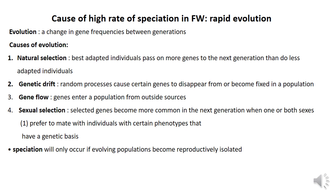Genetic drift: random processes can cause certain genes to disappear from or become fixed in a population. When some genes disappear, certain characteristics develop or become fixed in subsequent generations — this is called genetic drift, and it is also a form of evolution. Gene flow: genes enter a population from outside sources when species are introduced into a new environment — this is gene flow evolution.